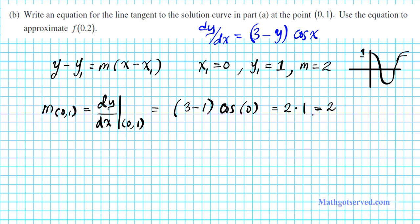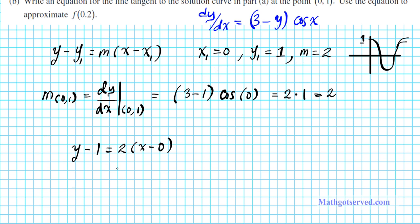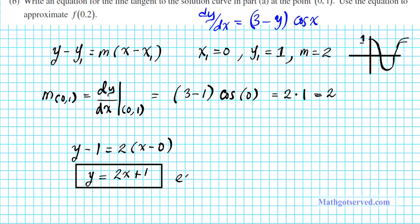Now we have everything we need to write the equation of the tangent line. We have y minus 1 equals 2 times (x minus 0). To write this in slope-intercept form, we get y by itself by adding 1 to both sides and distributing: y equals 2x plus 1. This is the equation of the tangent line — the line through the point (0, 1).